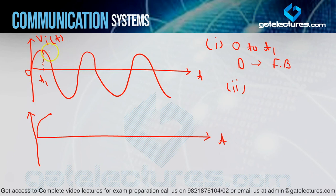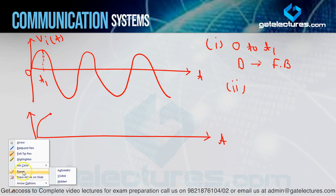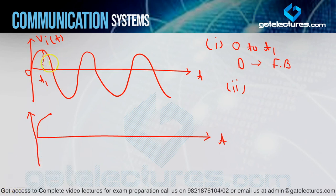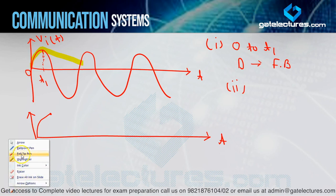Before complete discharge happens, you get the next increasing input waveform. Because the discharging time constant is very high, discharge is happening very slowly, so before it can fully discharge, the next increasing input waveform arrives. So the output that forms is like this — it discharges only partially. This time from T1 to T2, the diode was reverse biased and you got this discharging waveform.